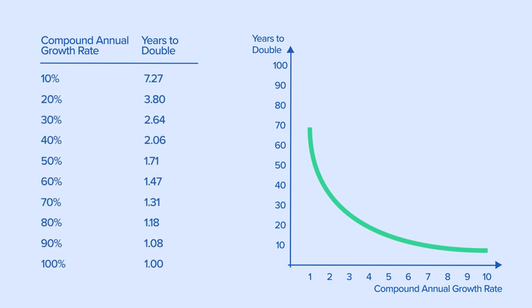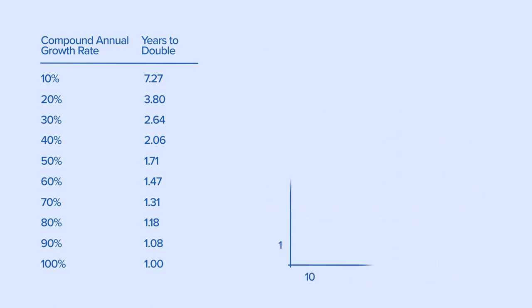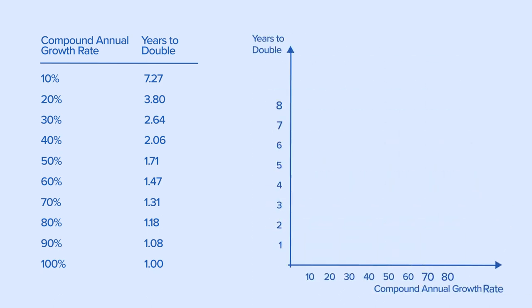This table shows values from 10% to 100%. Note that the vertical scale has changed, now ranging from 1 year up to 7 years.